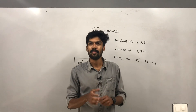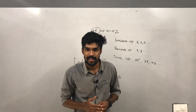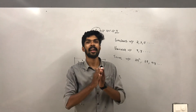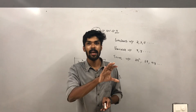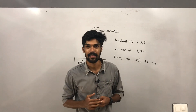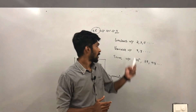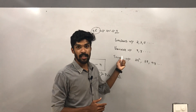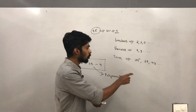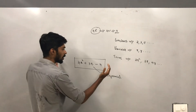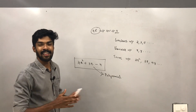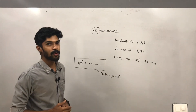So a polynomial is a combination of terms connected with operations like plus or minus. To summarize: first we studied constant, then variable, then the combination of these two is called a term, and the combination of terms is called a polynomial. That's all about polynomials.